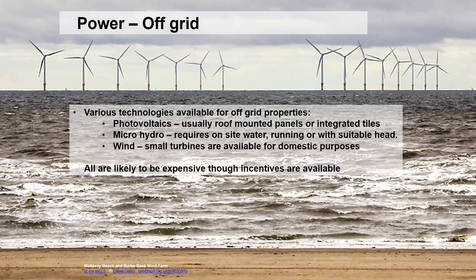If you're off-grid, you'll likely use some form of micro-generation. This could be photovoltaics if you have access to sunlight, micro-hydro if you have running water or a pond with a suitable head to drop water through a turbine system, or small wind turbines. Off-grid systems typically require local power storage, so you would have a battery bank.